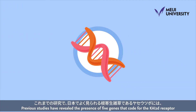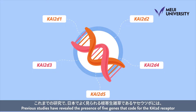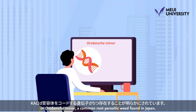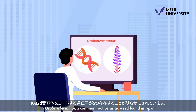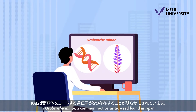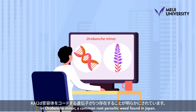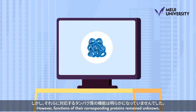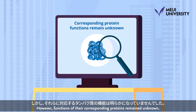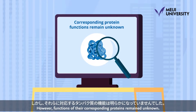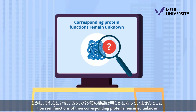Previous studies have revealed the presence of five genes that code for the CHI2D receptor in Orobanche minor, a common root parasitic weed found in Japan. However, the functions of their corresponding proteins remained unknown.